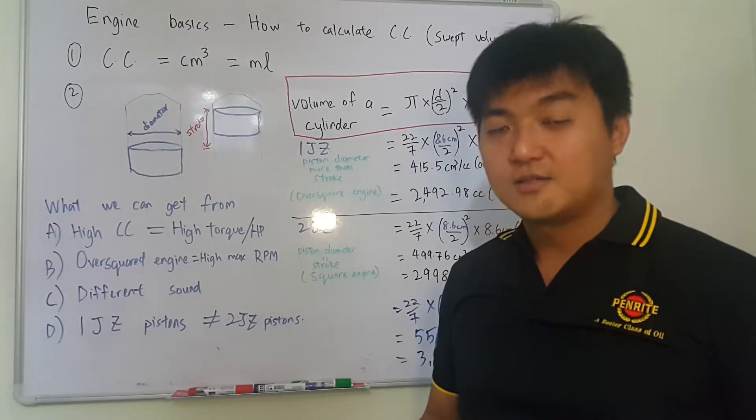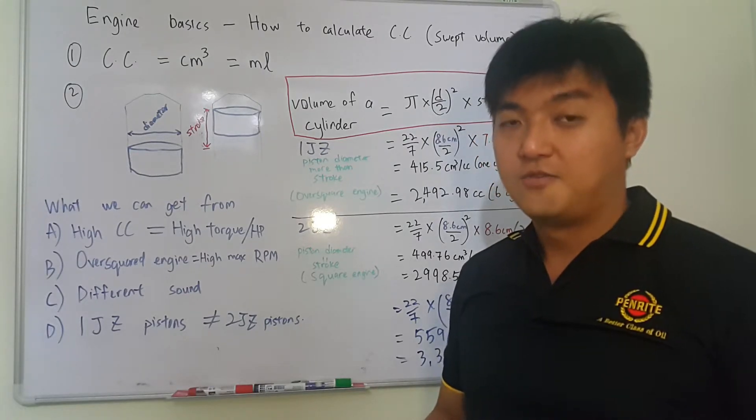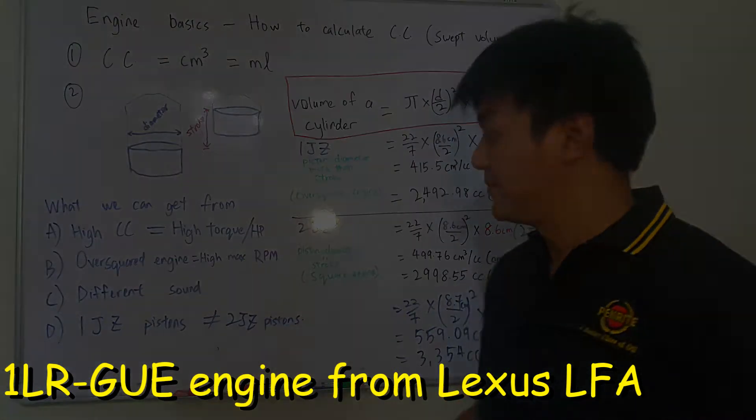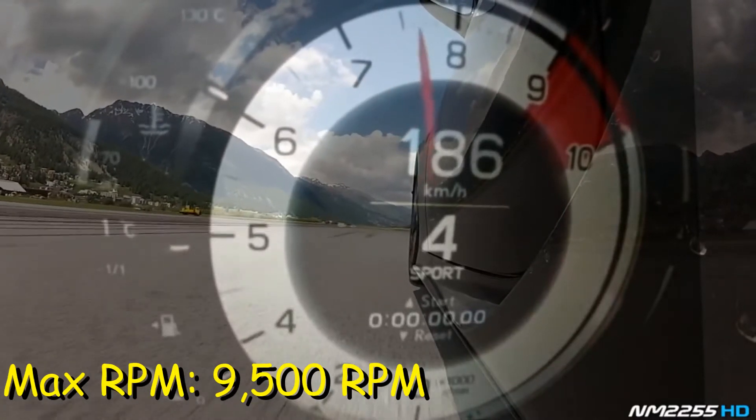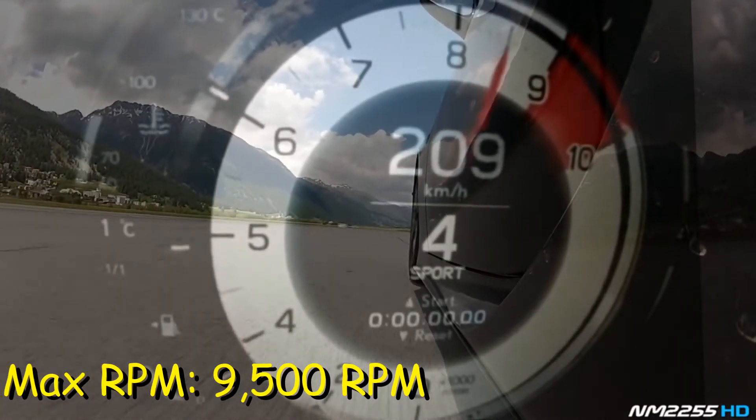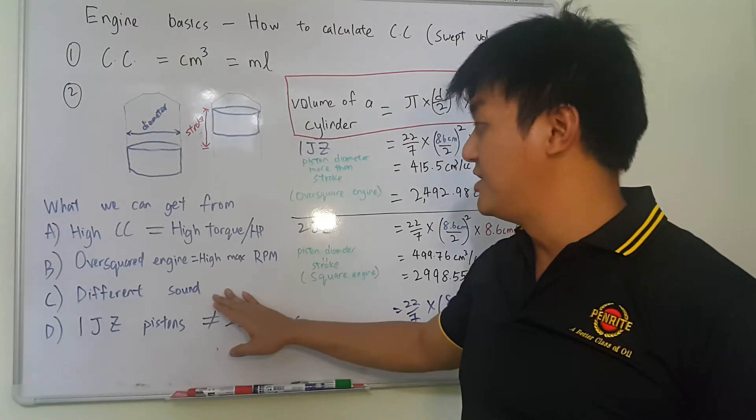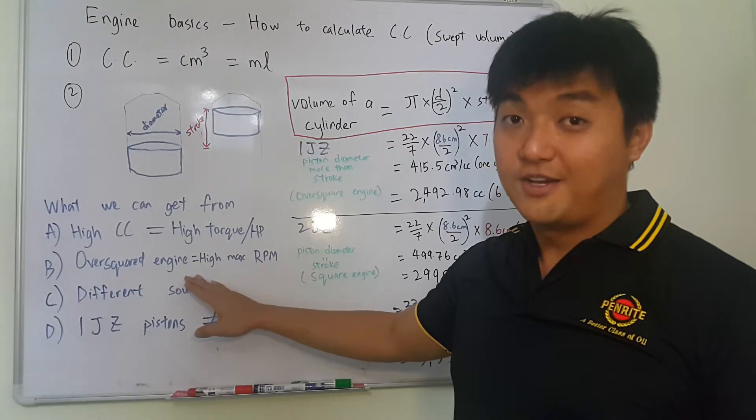And I also show you guys one of the engine from LFA. This engine can rev up to 9,000 RPM very smoothly. And definitely we can get different sound from different types of engine. If it is an over square engine, it sounds like a Ferrari.